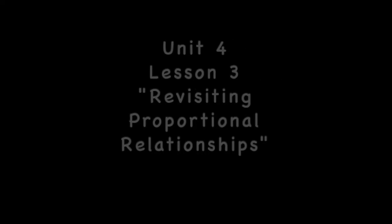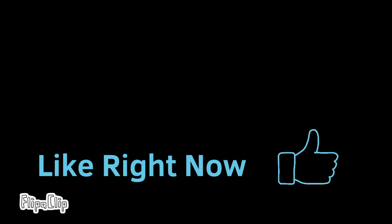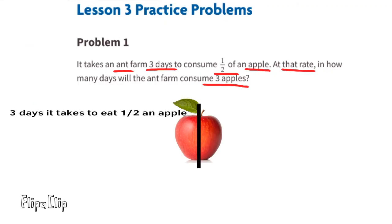Seventh grade Open Up Resources Illustrative Mathematics, unit four, lesson three: revisiting proportional relationships. Problem number one — it takes an ant farm three days to consume one half of an apple. At that rate, how many days will the ant farm consume three apples? The information tells us it takes three days to eat half an apple, and the question asks how many days to eat three apples.